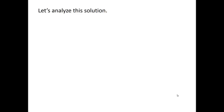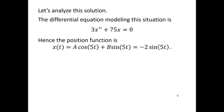Let's analyze this solution. The differential equation modeling this situation is 3x double prime plus 75x equals zero. Hence the position function is x of t equals A cos 5t plus B sin 5t equals negative 2 sin 5t. The amplitude C equals the square root of A squared plus B squared, which equals the square root of 0 plus negative 2 squared equals 2 meters.